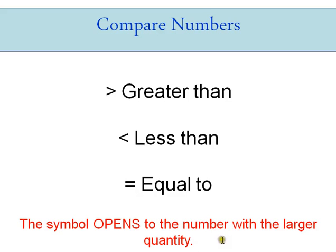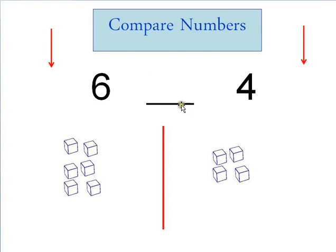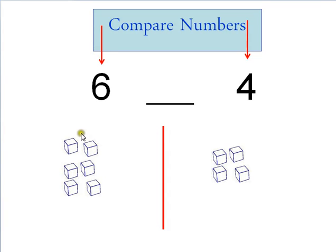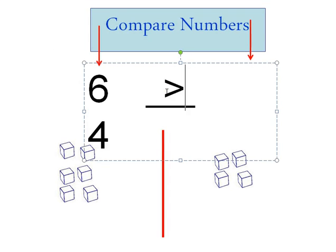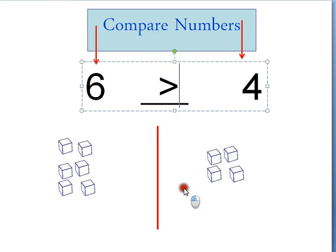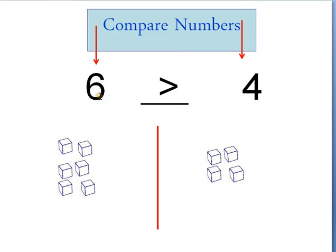The first thing we do — if we have two numbers that are just in the ones place — we just look at each number. Four and six: I have my six down here and my four down here. I know that I have more here, so six is a greater quantity. I'm going to use the greater than symbol, because it opens up to the larger quantity. That one's quite simple.